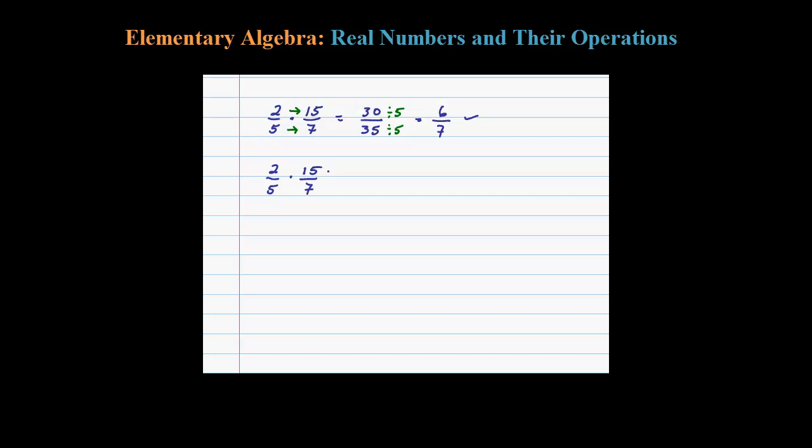Here I'm going to notice that 5 goes into 15. So I'm going to reduce first and then multiply. 5 goes into 15 three times. So what's left here is 2 times 3...